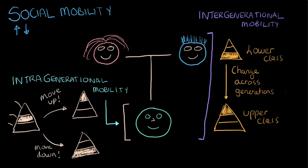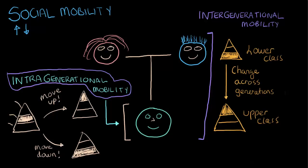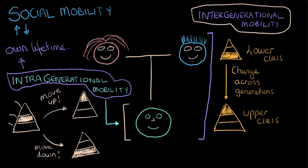So really one of the key concepts between both of these is that when we consider intra-generational mobility, we are considering social mobility change in a person's own lifetime, while when we consider inter-generational mobility, we are considering social mobility changes across generations.